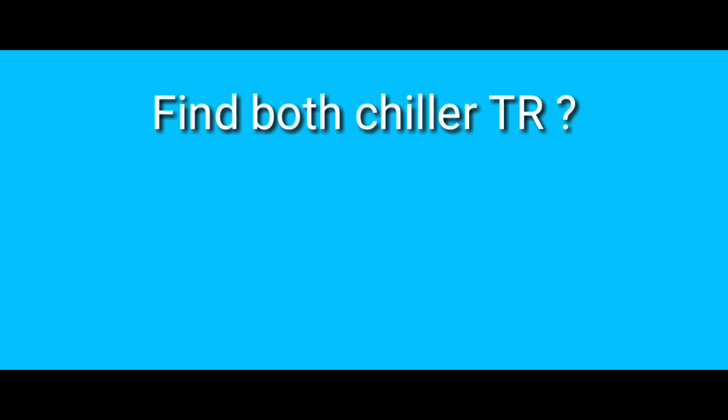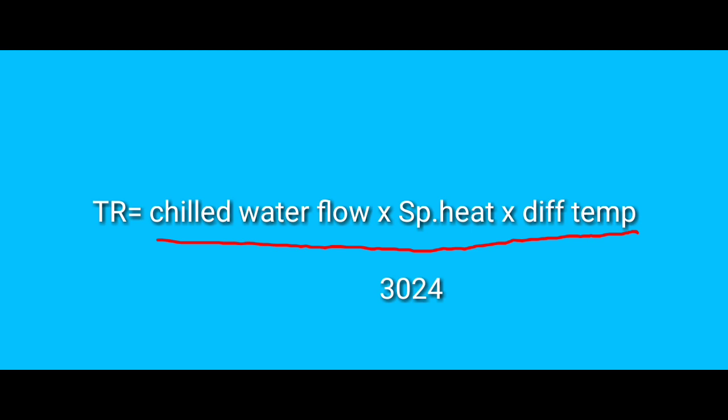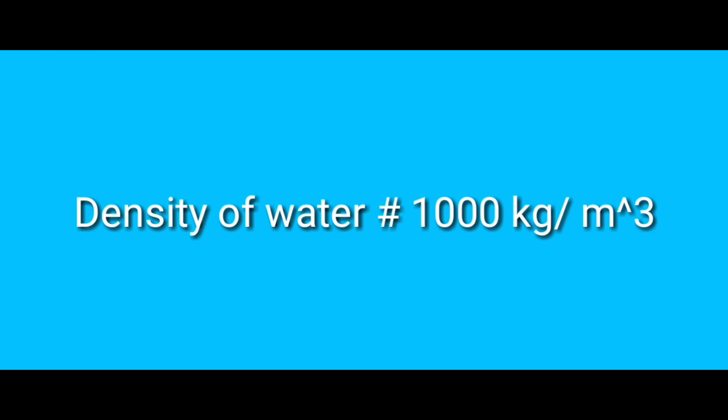So we will talk about auxiliary power and TR value. The TR formula: TR is equal to Chiller Water Flow multiplied by the difference of temperature between inlet and outlet, divided by 3024. Density of water is equal to 1000.